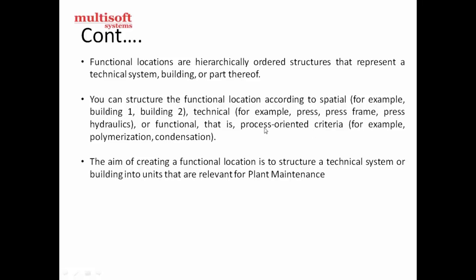Examples of technical equipment at a functional location include press machines, press hydraulics, DG machines (DG sets), and freezers. A lot of equipment can be installed in a functional location, and that's what relates to the technical criteria.